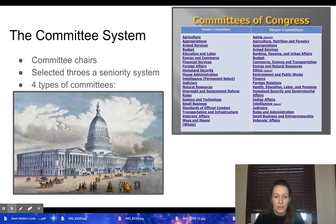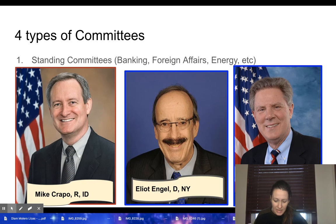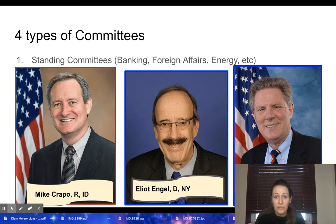The first type is a standing committee, which deals with proposed bills. They are permanent, existing from one Congress to the next. Some big ones include the Banking Committee, chaired by Mike Crapo, a Republican from Idaho; Foreign Affairs, led by Elliot Engel, a Democrat from New York; and Energy and Commerce, led by Frank Pallone of New Jersey, a Democrat. Other examples include governmental affairs and appropriations.